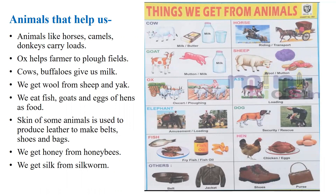People also eat fish as food. The skin of some animals is used to produce leather, which is used for making things like belts, shoes, and handbags. We get honey from honeybees and silk from silkworms.